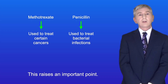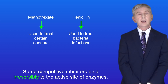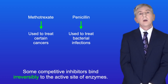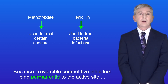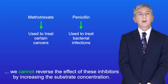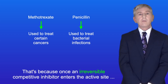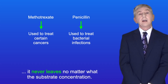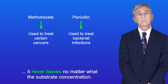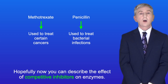This raises an important point. Some competitive inhibitors bind irreversibly to the active site of enzymes. Because irreversible competitive inhibitors bind permanently to the active site, we cannot reverse the effect of these inhibitors by increasing the substrate concentration. That's because once an irreversible competitive inhibitor enters the active site, it never leaves, no matter what the substrate concentration. Hopefully now you can describe the effect of competitive inhibitors on enzymes.